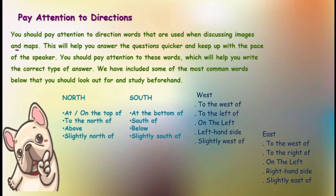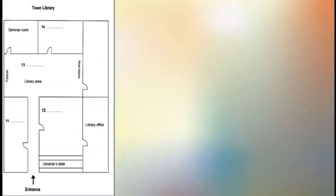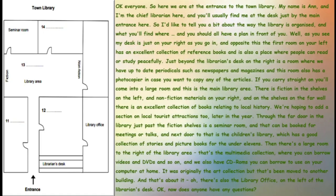If the east-west and north-south concept is provided, you will definitely know which direction to consider as north, south, east, and west. Now it's time to have a look at the example. Here is the map for you. This is the first time we are discussing map labeling. Here is the tape script — let's start reading it. It says: 'Okay everyone, here we are at the entrance of the town library. My name is Ann and I am the chief librarian here. You will usually find me at the desk just by the entrance.'